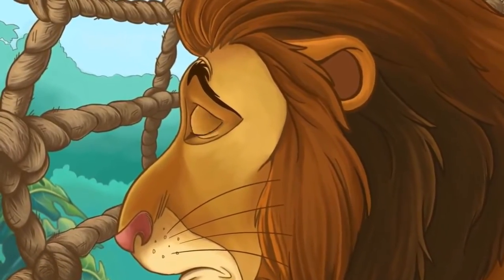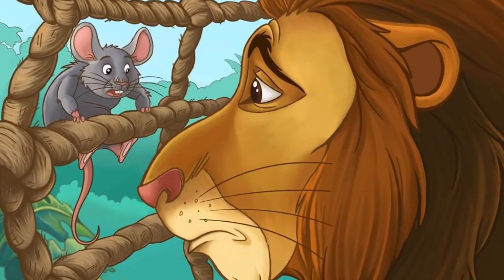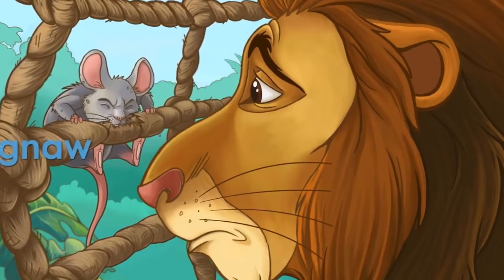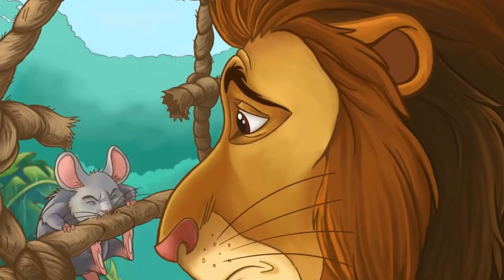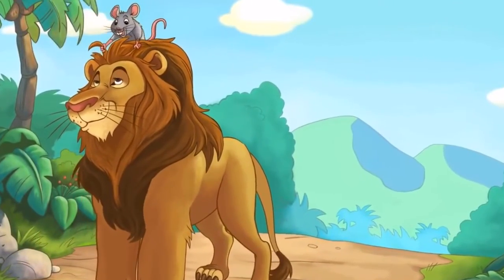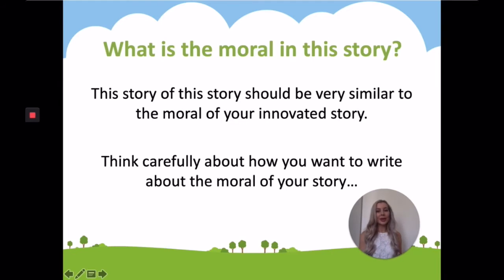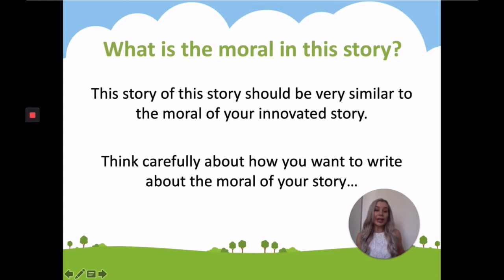The mouse heard the lion's cries. Remembering the lion's kindness, the mouse ran to the tree and climbed up to the trap. He used his sharp little teeth to gnaw through the thick ropes and set the lion free. The lion and the mouse were friends forever after. Both of them had learned that it is good to help someone. The moral of this story should be very similar to the moral of your innovated story, because it follows the same pattern of something helping something else and then being helped back in return.